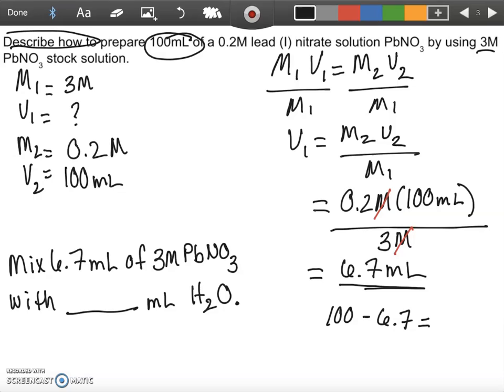So let's go ahead and do that. We're going to do 100 minus 6.7. We need to add 93.3 milliliters of water to this.